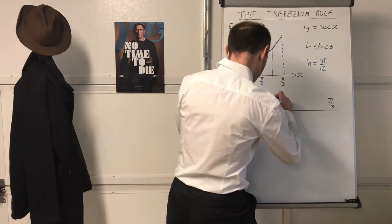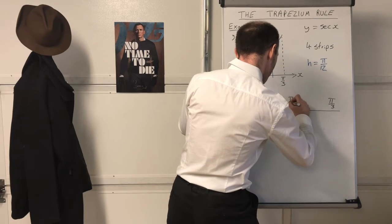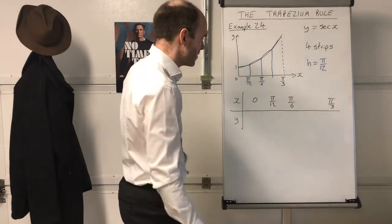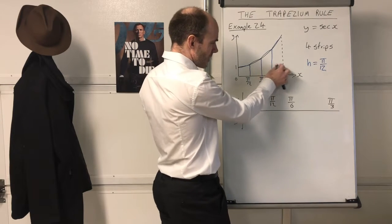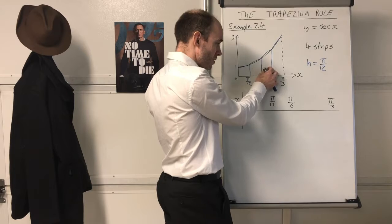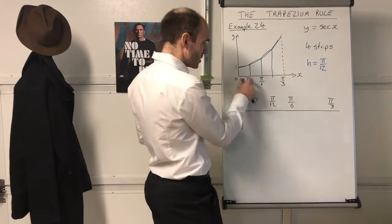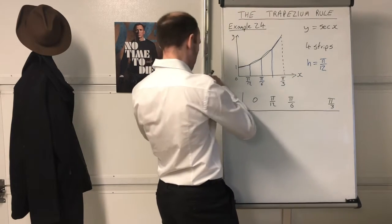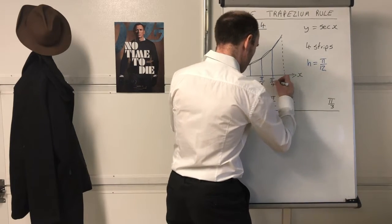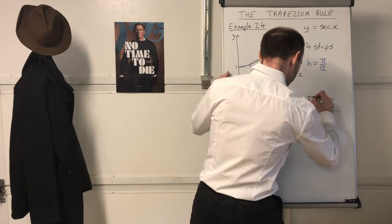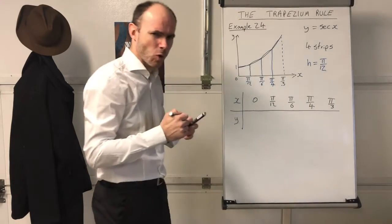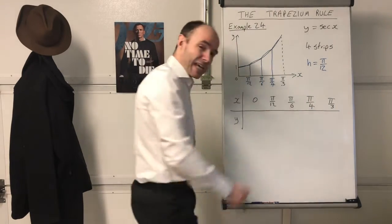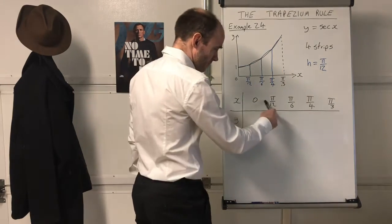In terms of the x-values: x equals zero, the next is π/12, then π/6. To work out the remaining one, just think of them as evenly spaced: π/12, 2π/12, 3π/12, 4π/12. So 3π/12 gives you π/4. That's how you get that value. This was given in the example, but it's not always the case — sometimes you have to work these out yourself.